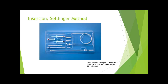The Seldinger technique can be used for chest tube placement, which involves using a guide wire to place the chest tube. This technique is particularly useful for the placement of small bore chest tubes and pigtail catheters. It is performed with the aid of ultrasound to confirm placement and positioning of the wire in the pleural cavity. Commercial kits are available, including the Thal-Quick chest tube set and the Portex-Seldinger chest drainage system.